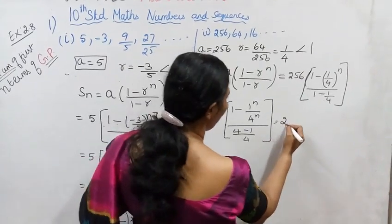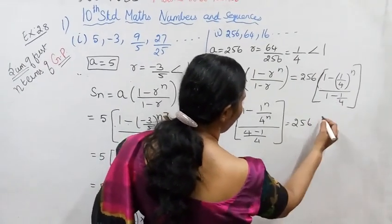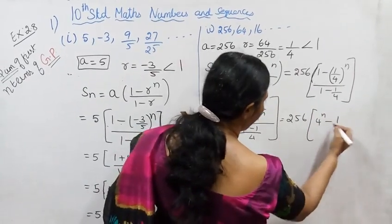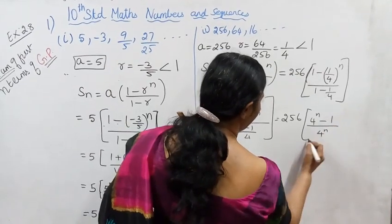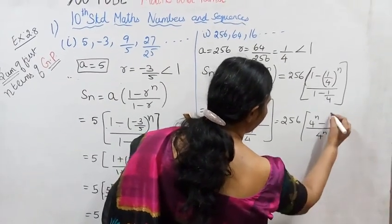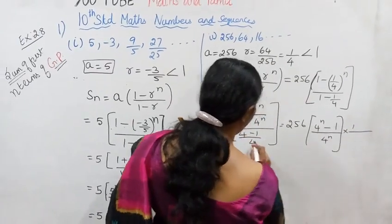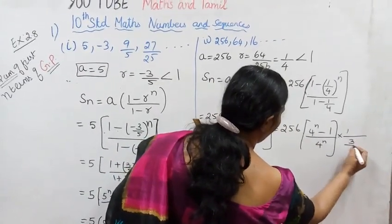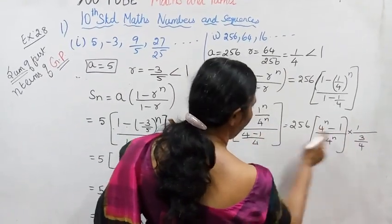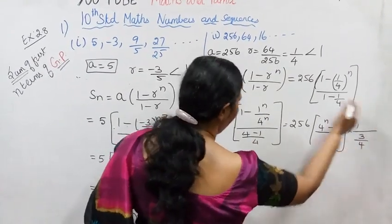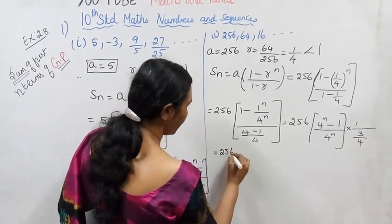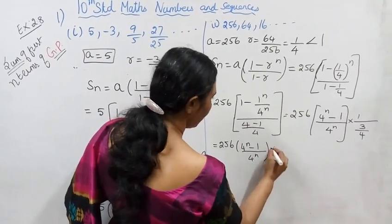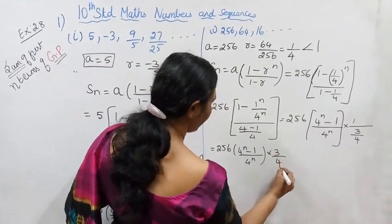That is equal to 256. 2 minus r on the control: 2 power n minus 1 power n, 1 by 4 power n. Into 1 by 4. This is what I do. 4 minus 1 is 3 by 4. In the 4. 4 power n minus 1 by 4 power n into 3 by 4. In the 4 power n.